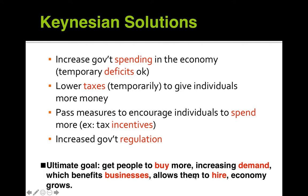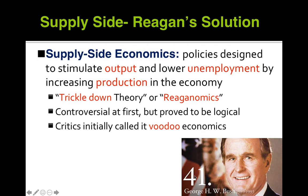If your economy is always Keynesian, you're going to have issues because the government is always the one producing and part of the growth cycle. Supply-side Reaganomics would counter this in the 1980s — policies designed to stimulate output and lower unemployment by increasing production. Also called trickle-down theory or Reaganomics, it was controversial at first but proved logical. Critics initially called it voodoo economics, not believing that giving money to businesses would trickle down to employees who would then produce more and spend that money back into the economy.